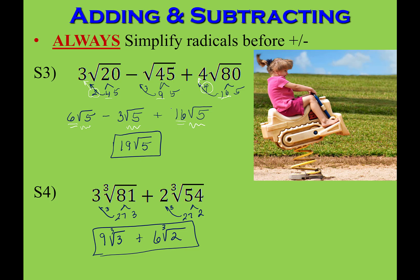For S4, I looked for perfect cubes and found 27 in both terms. Removing the cubed root of 27 gives 3, so 3 times 3 is 9 and 3 times 2 is 6. But the radicands were different — cubed root of 3 versus cubed root of 2 — so those are not like radicals. That's the end of the problem.